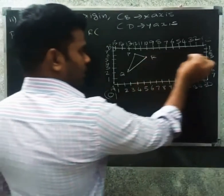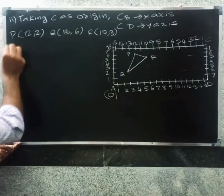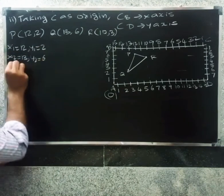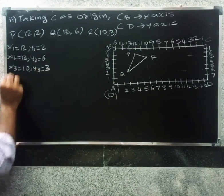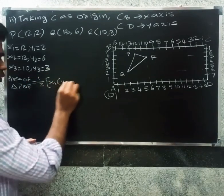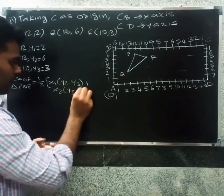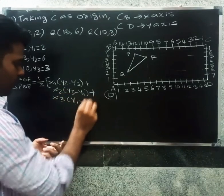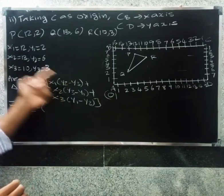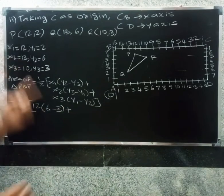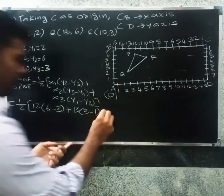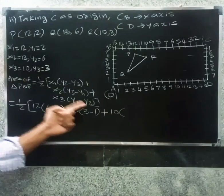So P is (12, 2). For Q, x-axis is 13 and y-axis is 6, so Q is (13, 6). And R is at (10, 3). So we have x1=12, y1=2, x2=13, y2=6, x3=10, y3=3. Area of triangle PQR equals one-half into x1 into (y2 minus y3) plus x2 into (y3 minus y1) plus x3 into (y1 minus y2).